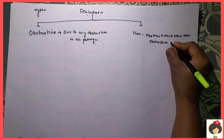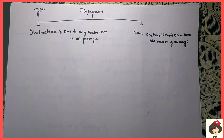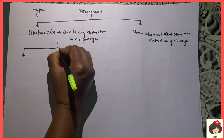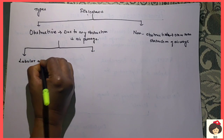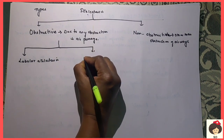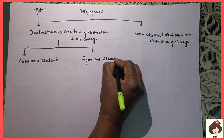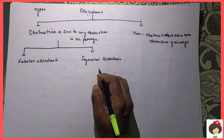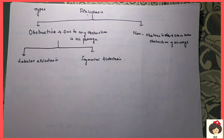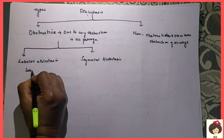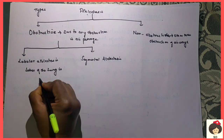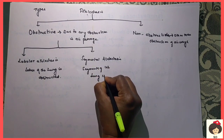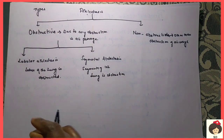Non-obstructive means it may be any other cause other than obstruction of the airways. If due to any other cause the alveoli are deflated and collapse, then we call it non-obstructive Atelectasis. Obstructive Atelectasis is further divided into two: lobular Atelectasis and segmental Atelectasis, classified according to the area where the obstruction is present. If the obstruction is in the lobes of the lung, we call it lobular Atelectasis; if in the segments, we call it segmental Atelectasis.